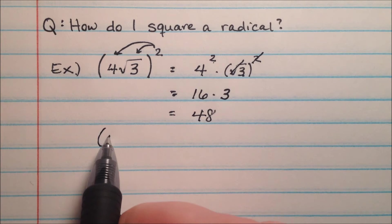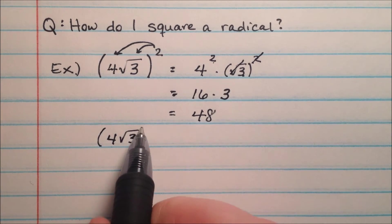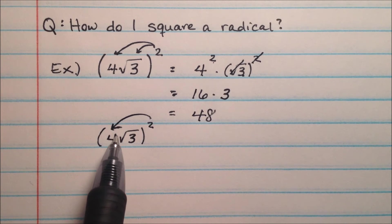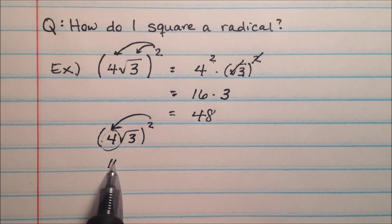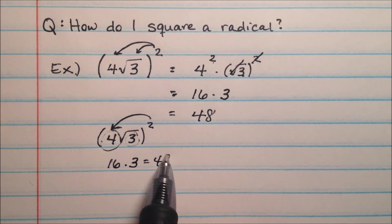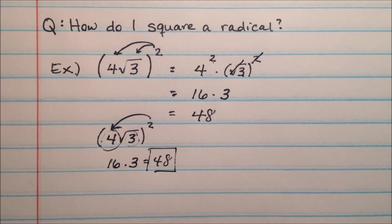Essentially what you can do to make it easier is square the coefficient out front here, square the 4 to make 16 and multiply it by the number inside the radical and that will give you 48, the same as we had before.